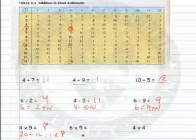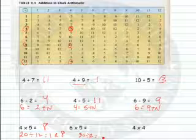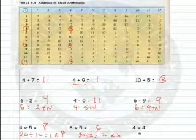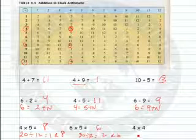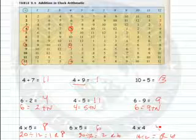6 times 5, that's 30. 30 divided by 12 is equal to 2 with the remainder of 6. So 6 times 5 would be equal to 6. 4 times 4 is 16. 16 divided by 12 is equal to 1 with the remainder of 4. So the answer is 4 here.